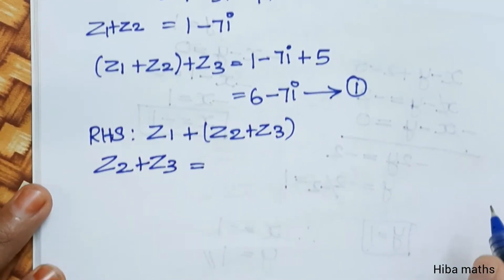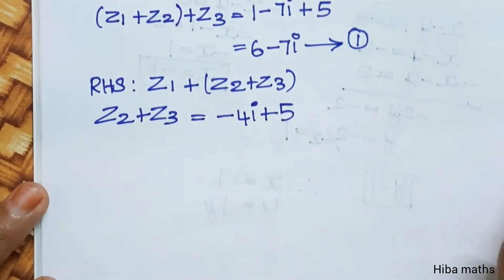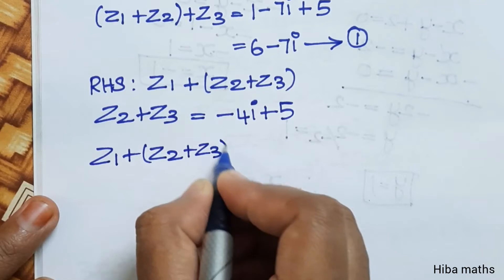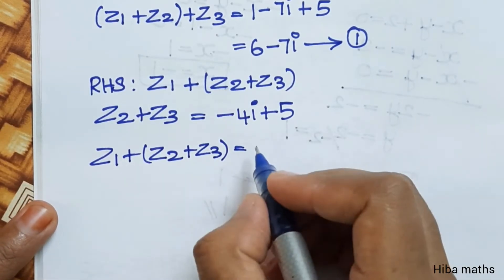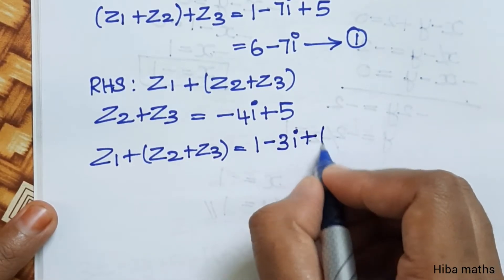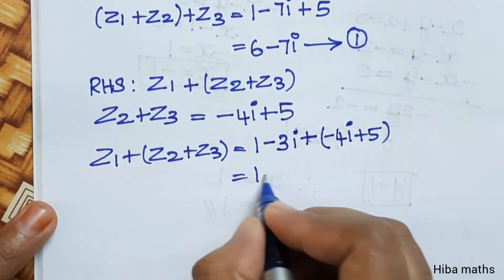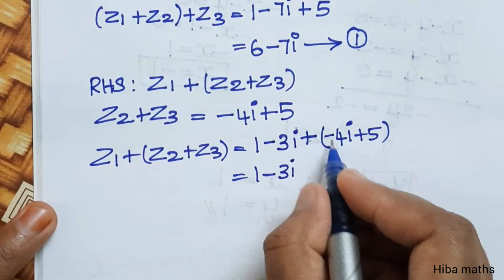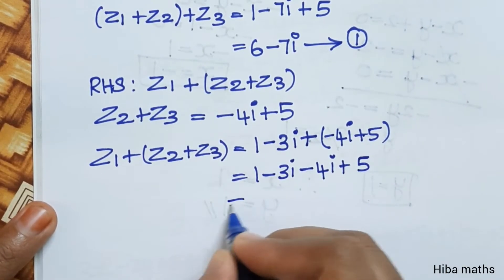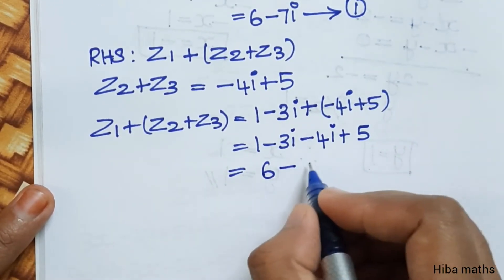For RHS: z2 value is minus 4i plus z3 value 5. Then z1 value 1 minus 3i, plus bracket minus 4i plus 5. Opening the bracket: 1 minus 3i plus minus 4i plus 5. Combining: 1 plus 5 is 6, and 3 plus 4 is 7, giving 6 minus 7i.